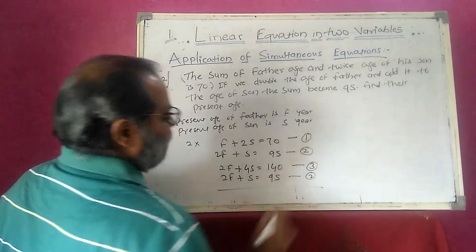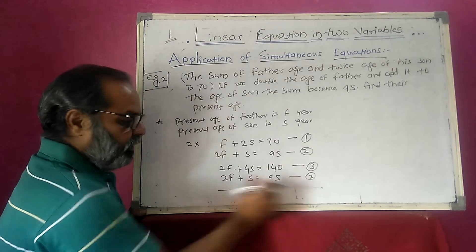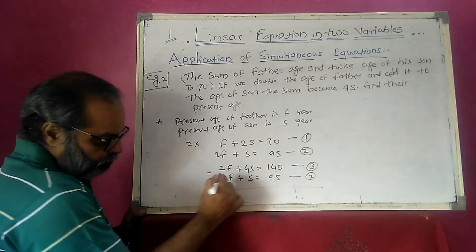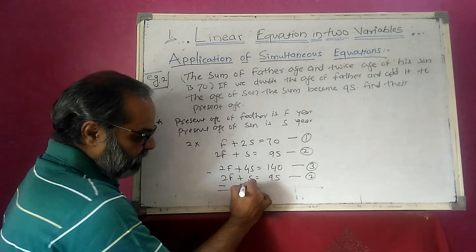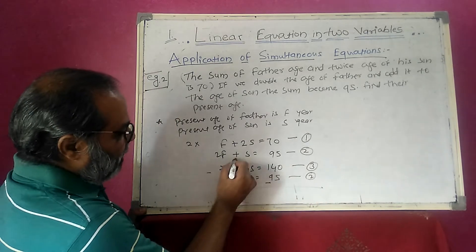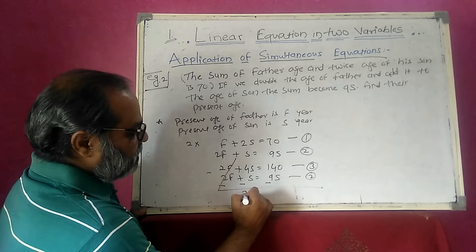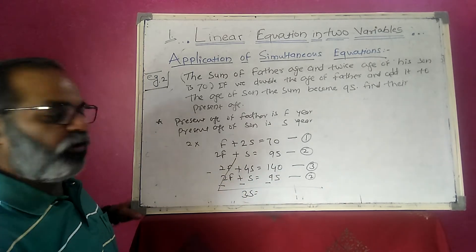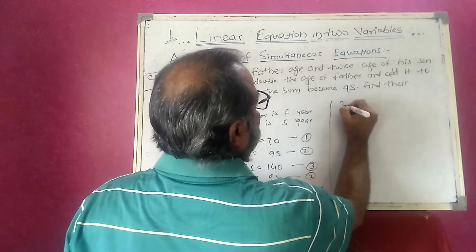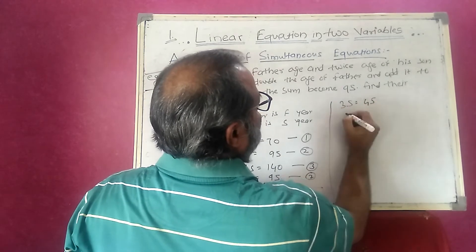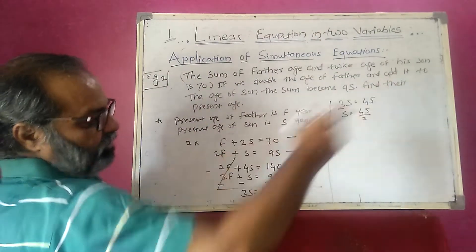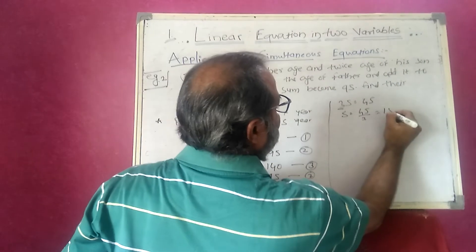I subtract equation 2 from equation 3, changing all signs of equation 2: 2f becomes minus, s becomes minus, 95 becomes minus. So 2f minus 2f cancels. Then 4s minus s gives 3s, and 140 minus 95 gives 45. So 3s equals 45, therefore s equals 45 divided by 3, which is 15.